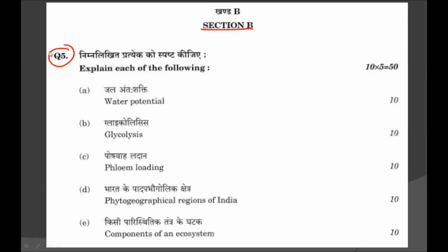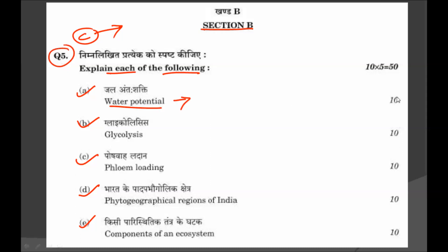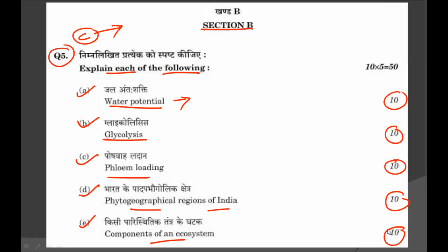Section B has started with Question 5. Remember, questions 1 and 5 are compulsory. This question is divided into 5 sub-questions A, B, C, D and E. You have to explain each of the following terms: water potential (10 marks), glycolysis (10 marks), phloem loading (10 marks), and phyto-geographical regions of India (10 marks).